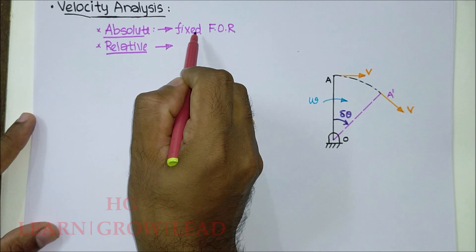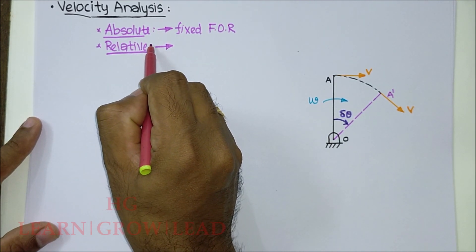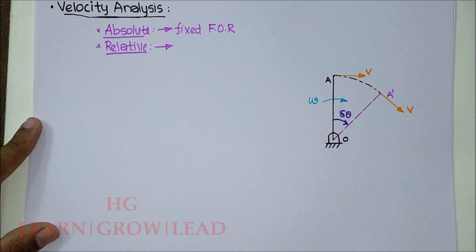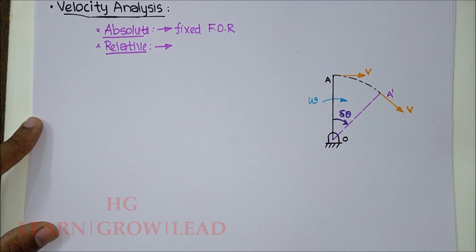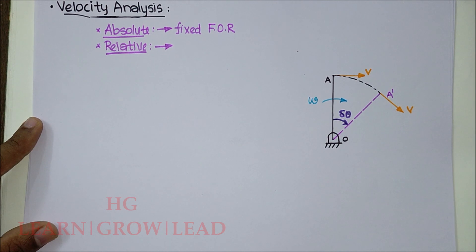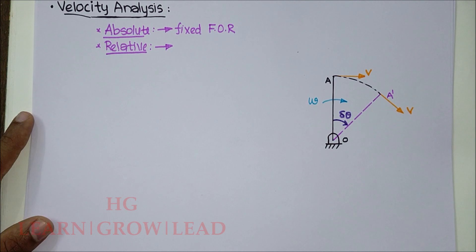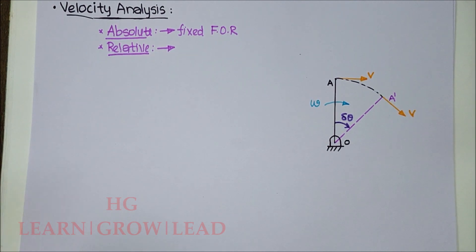The relative velocity method is a basic school level concept. For example, if I am on a road and a bike passes me, the velocity of that bike with respect to me is its absolute velocity. When I am also on a bike or car, then the velocity between us is the relative velocity. That is a very important distinction.